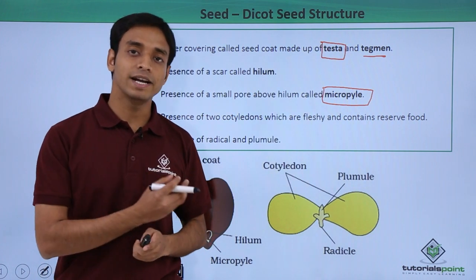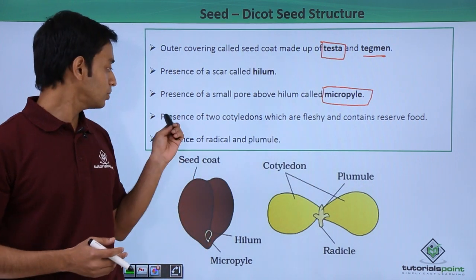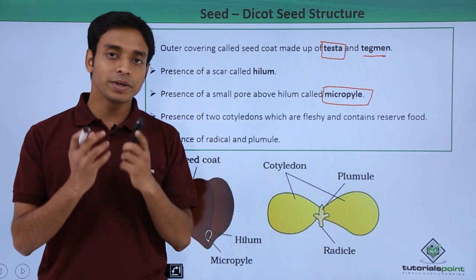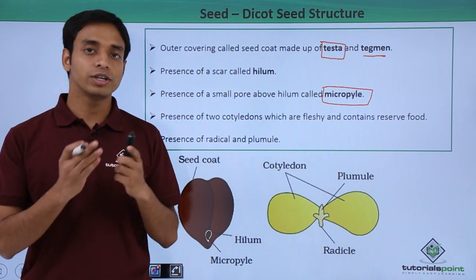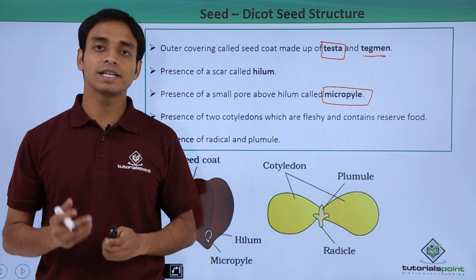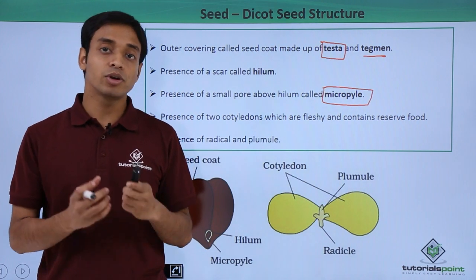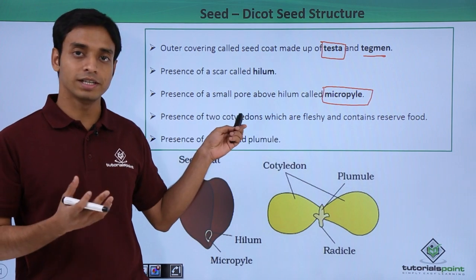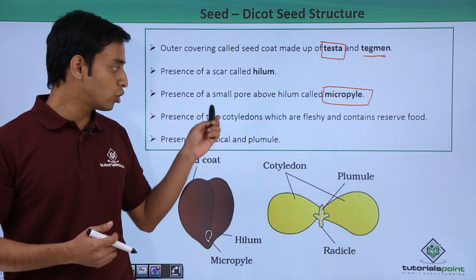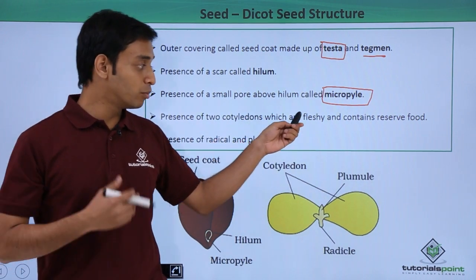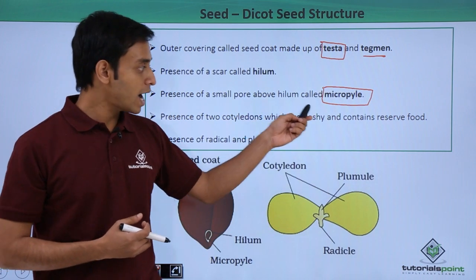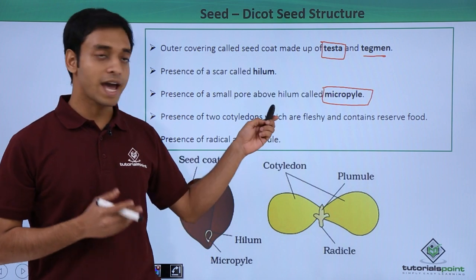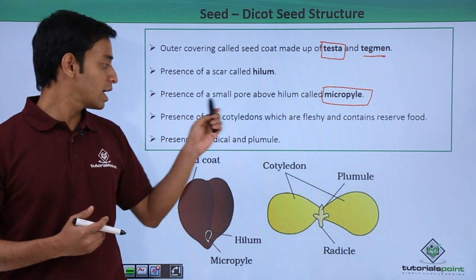A typical dicot seed contains different structures: an embryo, an embryonal axis, and two cotyledons. These two cotyledons are mostly fleshy in dicots and contain reserved food materials.